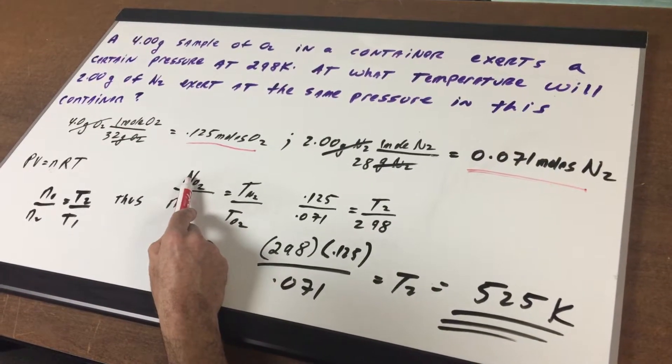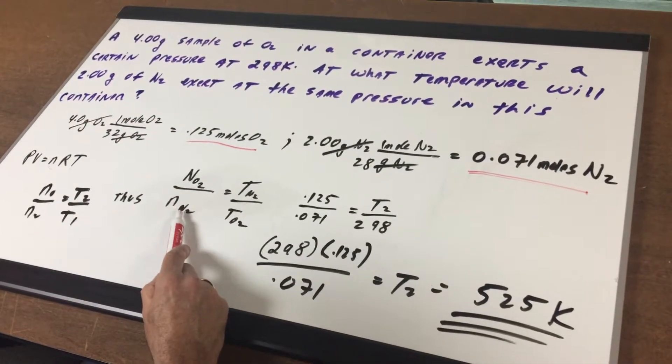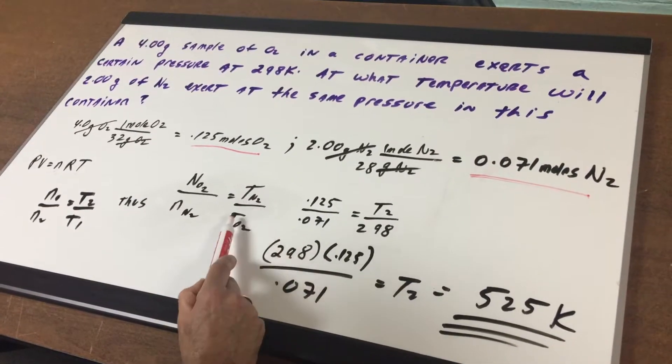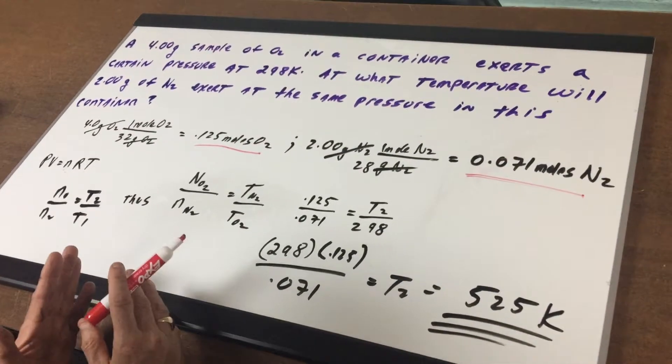Or n, which stands for moles, the moles of oxygen divided by the moles of nitrogen is equal to the temperature of nitrogen over the temperature of oxygen. So what I did is I set up a ratio.